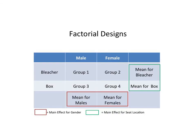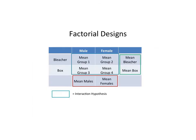Looking at this visual, we put the means for each person's satisfaction scores — males in the bleachers, males in the box seats, females in the bleachers, and females in the box seats. When you sum up the total mean for males versus females, you're testing the main effect hypothesis for gender. When you average those in the bleachers versus box seats ignoring gender, you're testing the main effect for seat location. The interaction hypothesis is tested by comparing the four cell means inside.